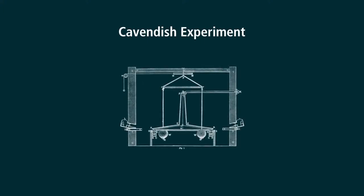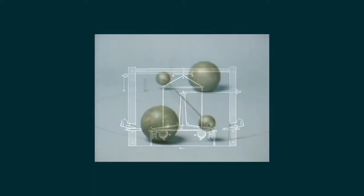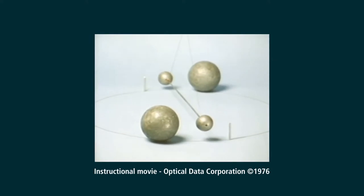Gravity exists and we have a number of ways to observe it. We can measure the gravitational constant by performing the Cavendish experiment. Thousands of students perform this experiment every year all over the world and have done so for decades, as this instructional movie from the 70s shows.